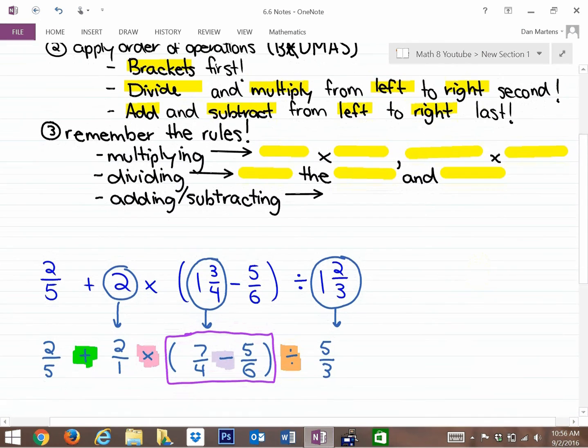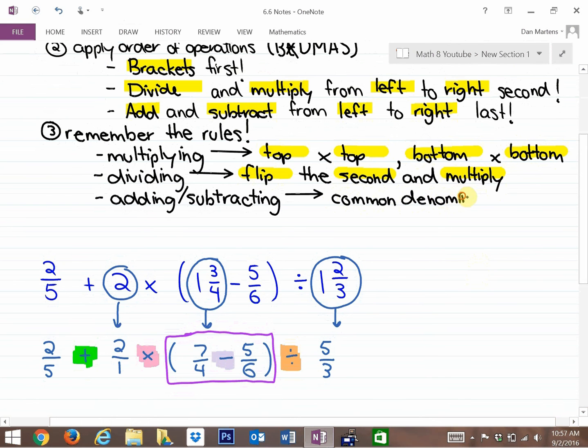The last thing is to remember the rules. When multiplying, it's simply top times top and bottom times bottom. For dividing, dividing fractions is easy as pie: flip the second and multiply. It's called multiplying by the reciprocal. Adding and subtracting tend to be longer and more difficult because you first need a common denominator. Let's approach this entire question now.